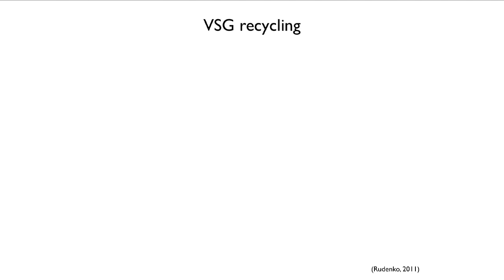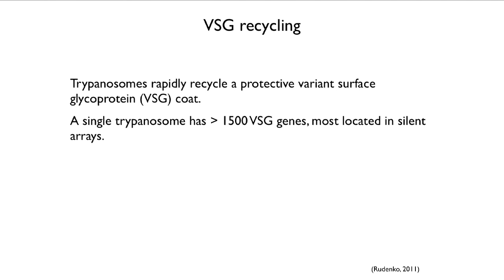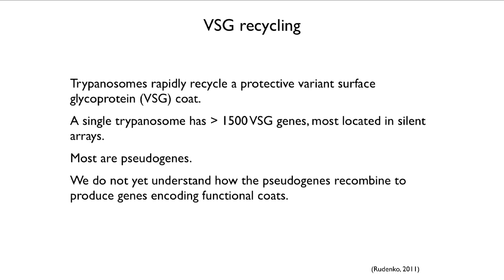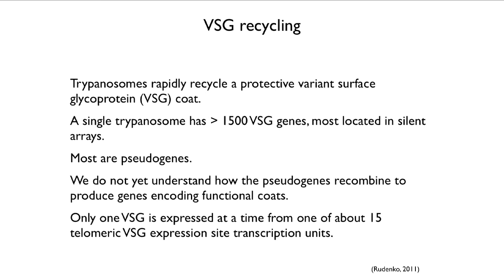Variable surface protein recycling is steered by genes, and there are more than 1,500 variant surface glycoprotein genes in the trypanosome genome. Most of them are in silent arrays — operationally pseudogenes not currently being expressed. We don't yet fully understand how these pseudogenes are recruited and recombined to produce a gene that is actually expressed and encodes a functional coat. Only one is expressed at a time, and there are about 15 different expression site transcription units. So cycling goes on among those 15, but there is a backup library of 1,500 that could be involved.